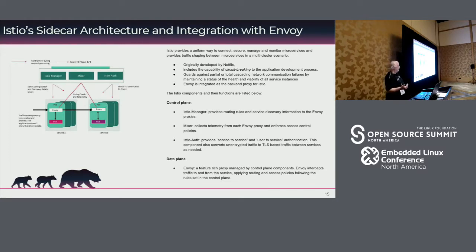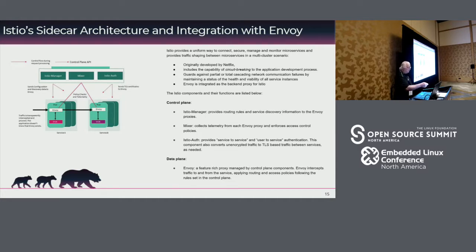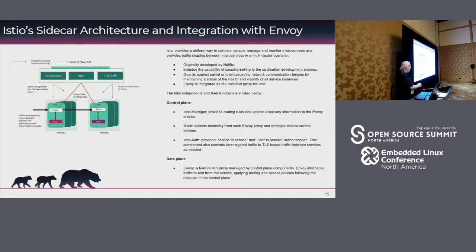Istio, which I think is becoming one of the more prominent players in the service mesh market, actually took the Envoy methodology and put it on steroids. For each container created, it creates a sidecar — that's the Envoy initiator — that talks to the mixer, which does governance of traffic flow. It also takes care of authentication so that no request ever gets to your container without going through it first, and it's really lightweight from a data plane standpoint.